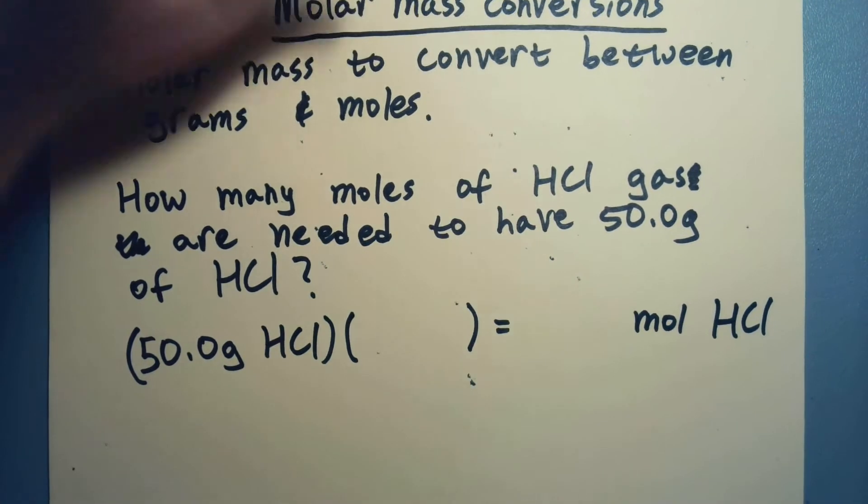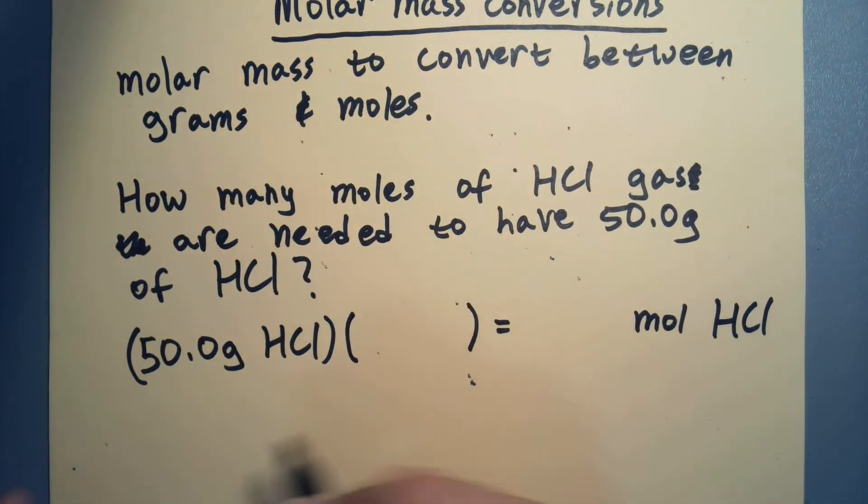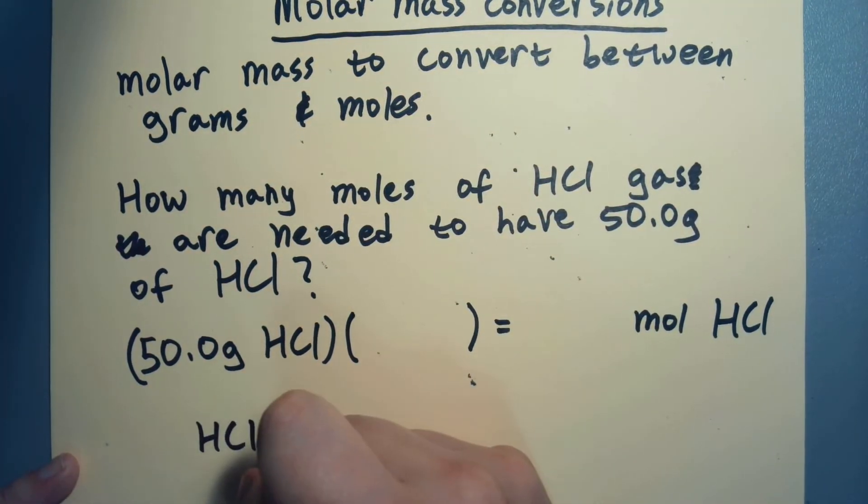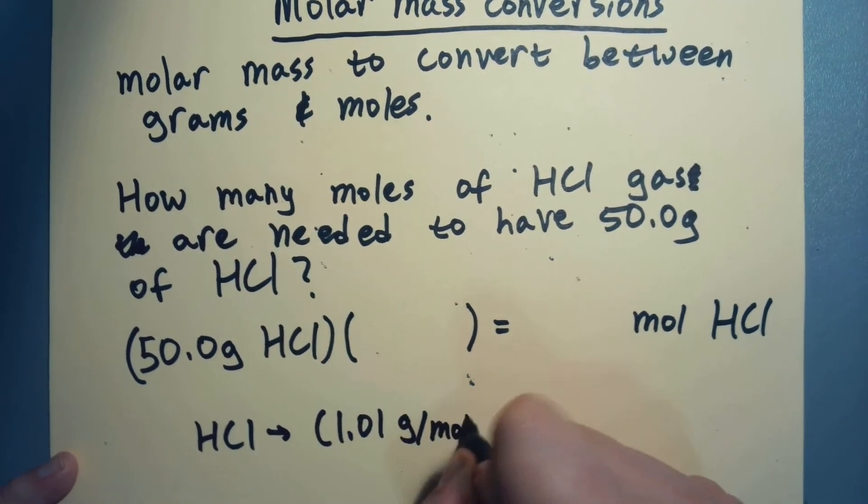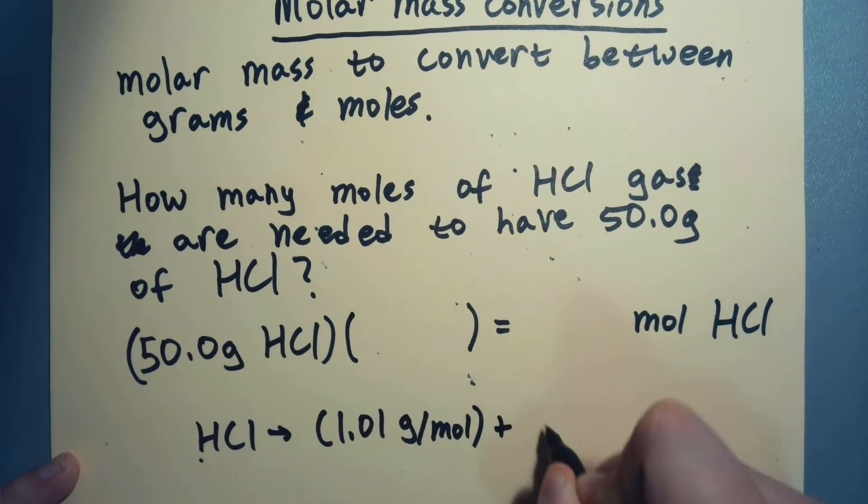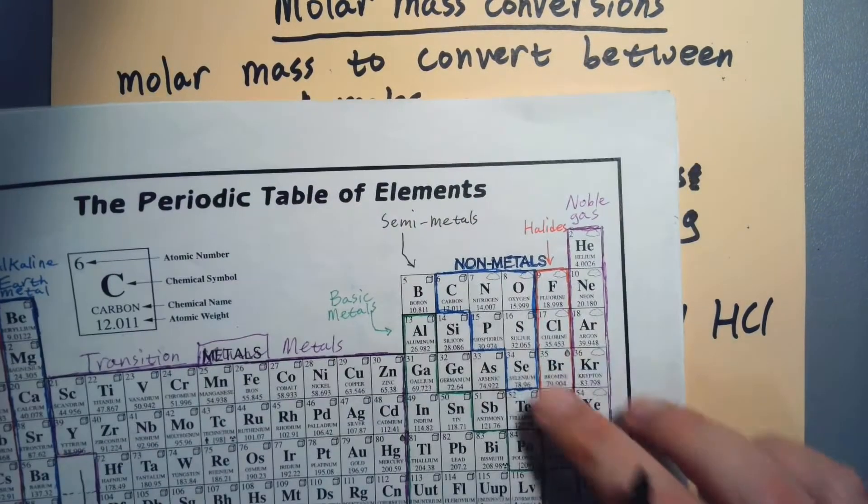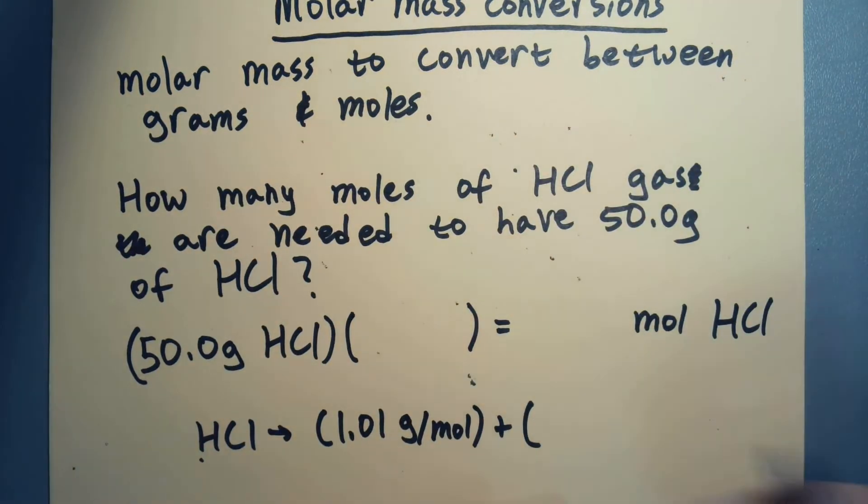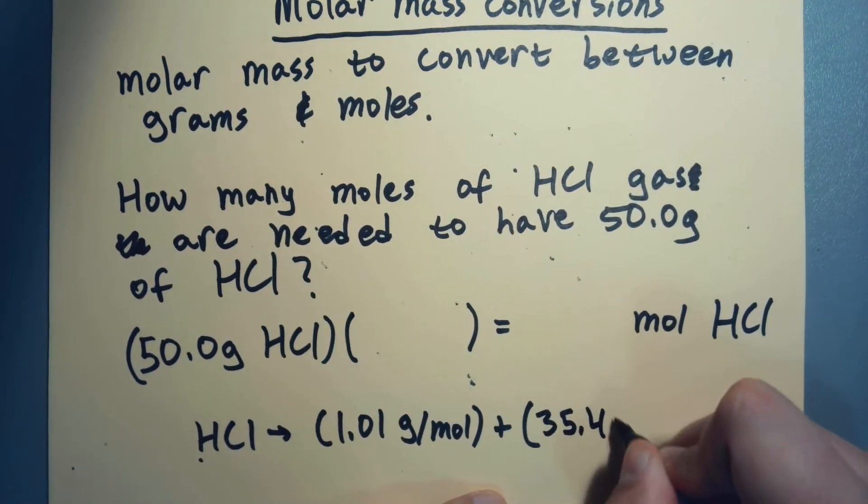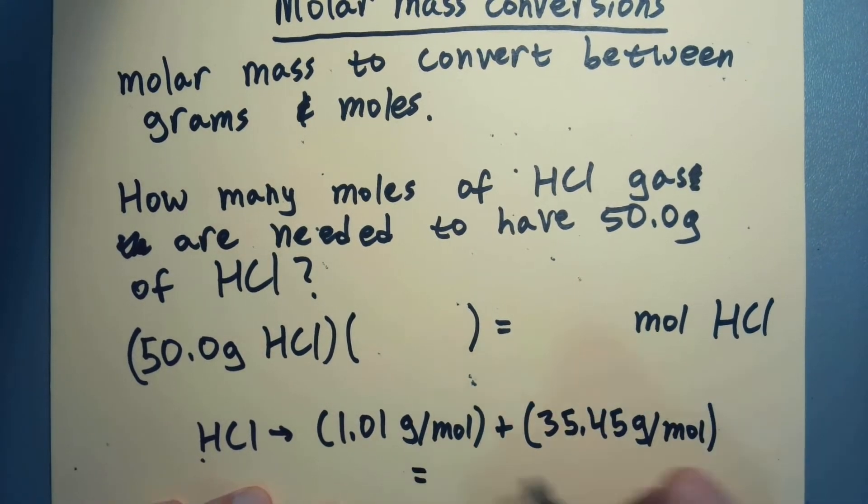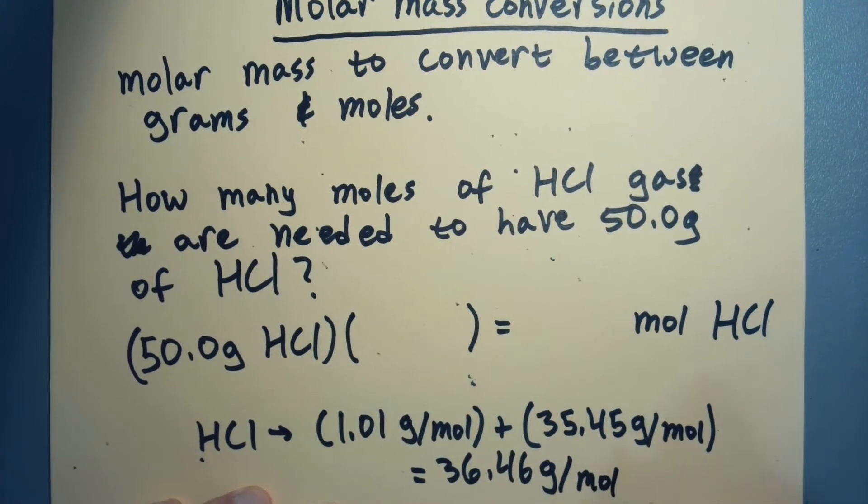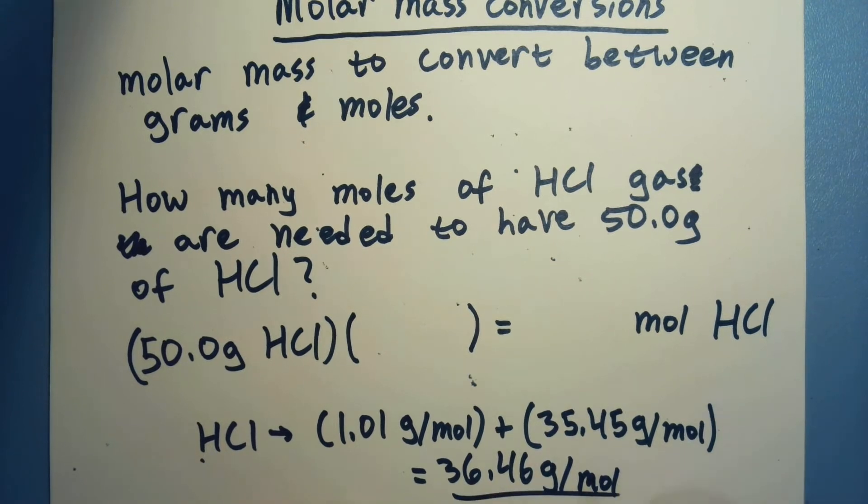What do we know about the molar mass of HCl? Well, we know there's an H, so 1.01 grams per mole for one hydrogen, and we've got a chlorine, and that is 35.45 grams per mole. We add it up and we get 36.46 grams per mole. So that is going to be what we use here.